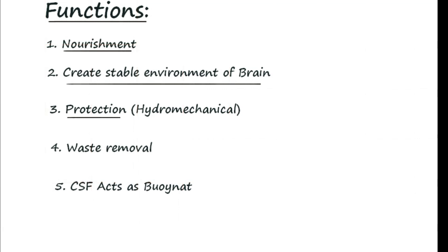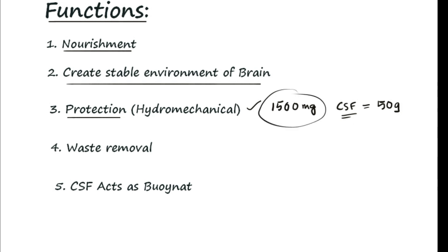The CSF protects the brain by hydromechanical activity. The brain weight is around 1,500 grams or 1.5 kg. However, with the presence of CSF, the effective brain weight is felt to be around 50 grams. This maximum reduction in weight is maintained because the brain floats in the cerebrospinal fluid, minimizing its actual effective weight.